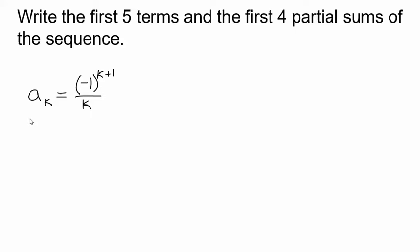In this video we're going to look at the sequence a sub k and write out the first five terms and the first four partial sums. This sequence is a special type of sequence and that name will become apparent as we work through this. It doesn't really tell us here where to start so we're just going to assume we're starting at k equals 1 unless otherwise specified.